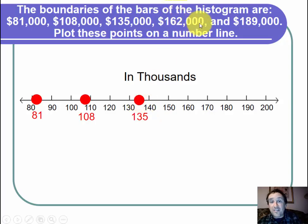Then we have 162,000. Here's 160. It's a little bit past 160, just around there. And I plot 162.